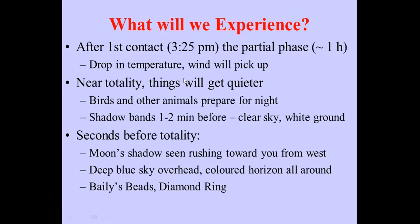In the last minute before totality, watch for shadow bands — a subtle phenomenon where, with just a narrow sliver of sunlight left, air movement in the upper atmosphere creates bands of shadow about a foot wide sweeping across the ground. You need a white surface for contrast to see them. On April 8th, New Brunswick might have natural white ground — though a lot of foot traffic may disturb the snow, so don't spend too much time looking for them.